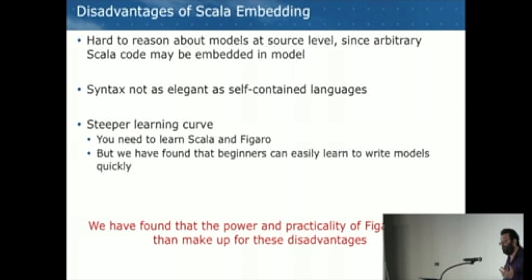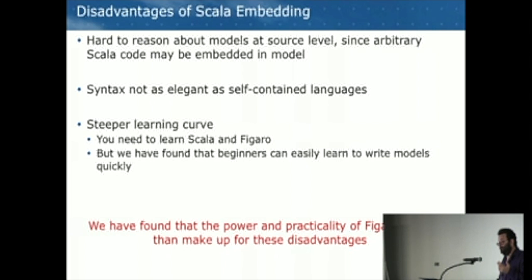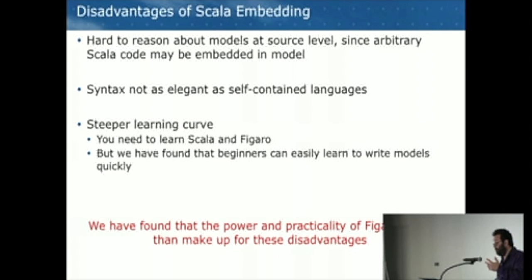There are disadvantages of Scala embedding. Because we can embed arbitrary Scala code, it's harder to reason about Figaro at the source code level and do program transformations that might lead to better inference. Representing Figaro models in Scala is not quite as elegant a syntax as a standalone special-purpose language. And there is a steep learning curve, especially if you don't know Scala. However, beginners can easily learn to write Figaro models quickly, and our experience is we've been able to build many applications where the power and practicality more than make up for these disadvantages.